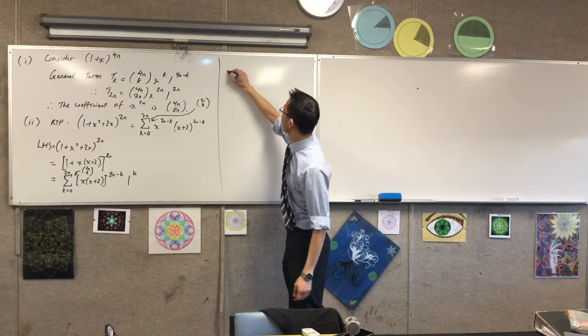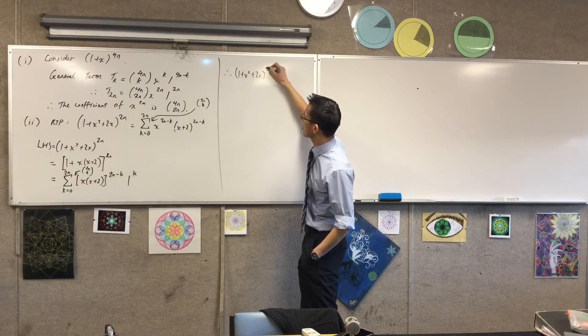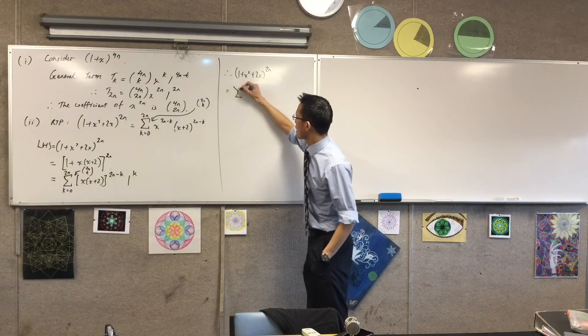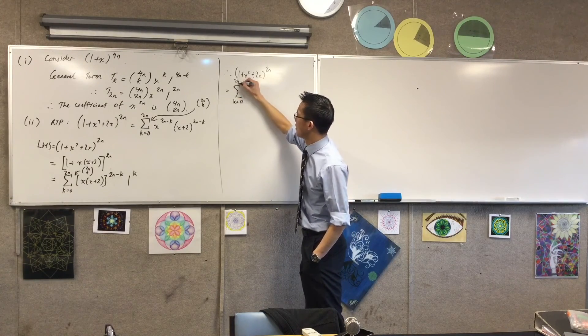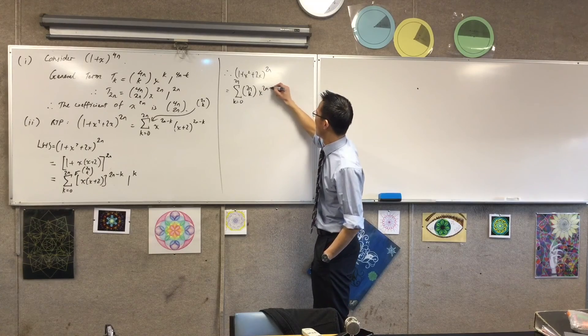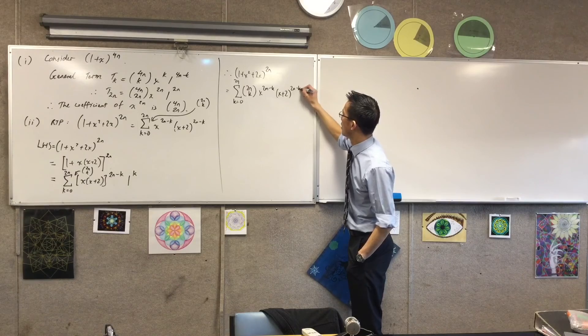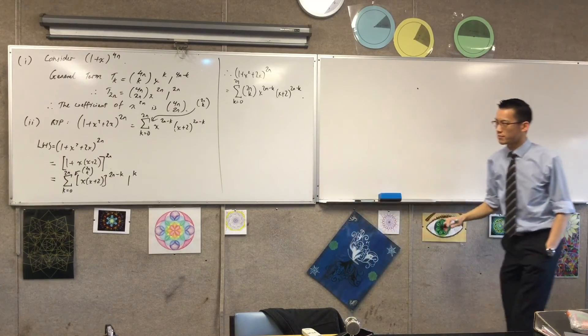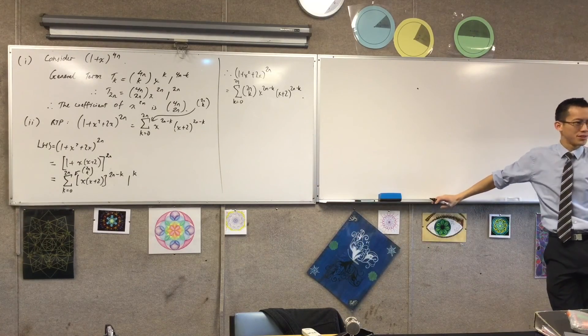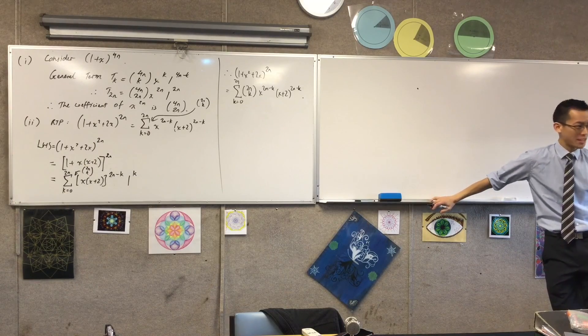Okay. So therefore, your final line will be 1 plus x squared plus 2x to the power of 2n. Equals. And I'm just going to write the result as required. But this time I'll write it properly with the binomial coefficient in it. Yes? Could you be lazy and just say equals RHS? From that point on. Yeah, you probably could. Okay. I'm done. You happy? That's part 2. Thank you.